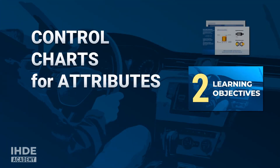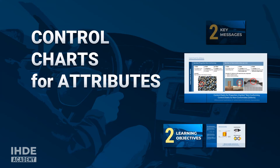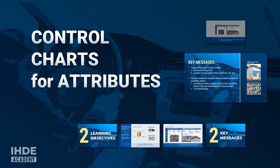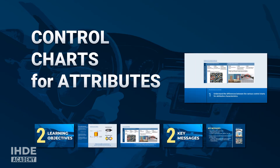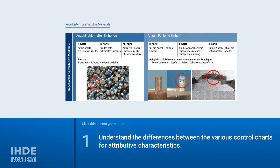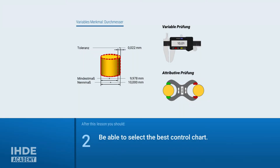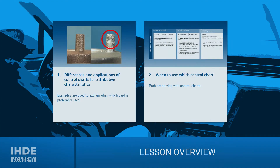In this lesson, we will look at the different control charts for attributes and provide examples of when to use which. This lesson has two learning objectives. At the end, you should know the differences between the various control charts, and you should be able to select the appropriate control chart for a specific application. This lesson is divided into two chapters: the first covers the different control charts for attributes, and the second discusses when to use which control chart.